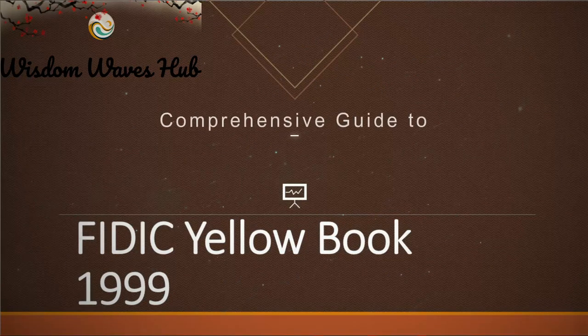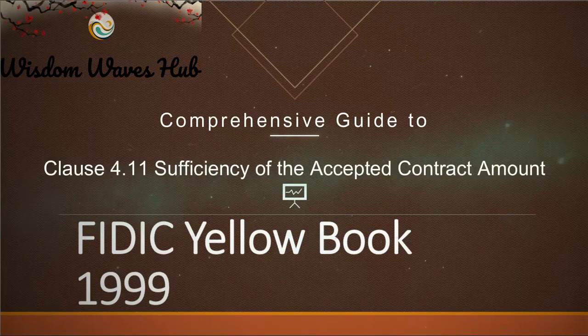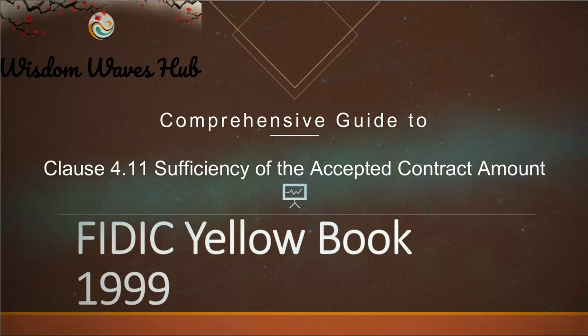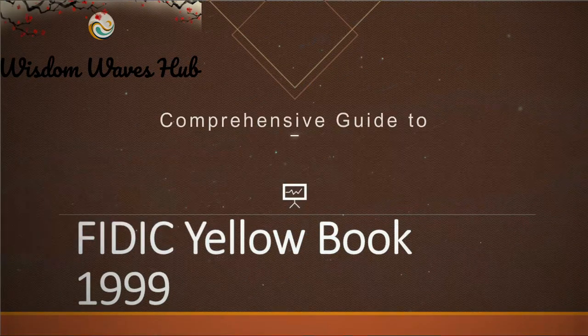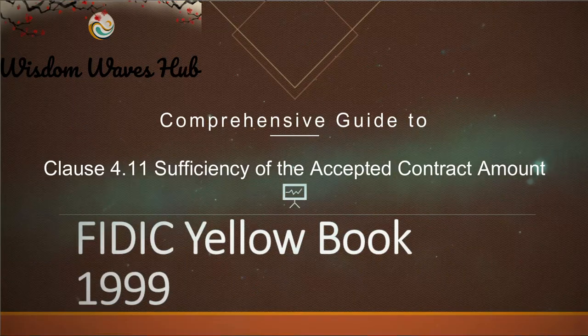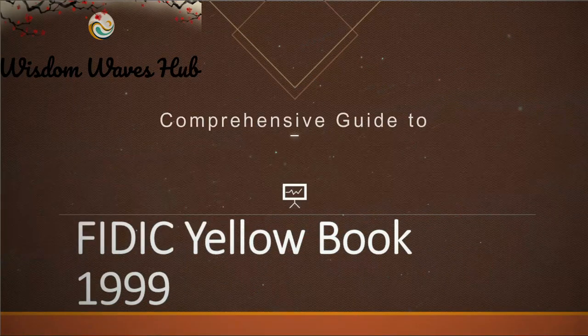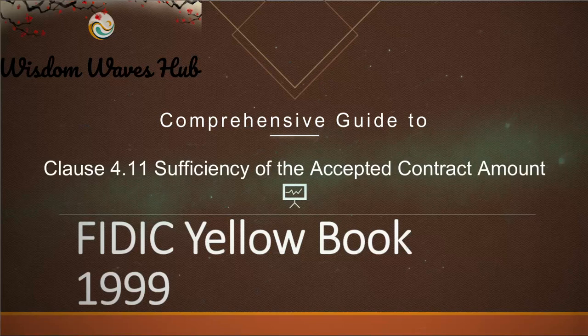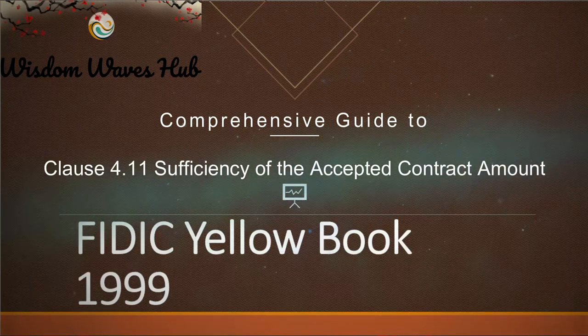Today, we're unpacking a topic that's a cornerstone in the world of international construction contracts: the FIDIC Yellow Book 1999, with a spotlight on Clause 4.11 — Sufficiency of the Accepted Contract Amount.